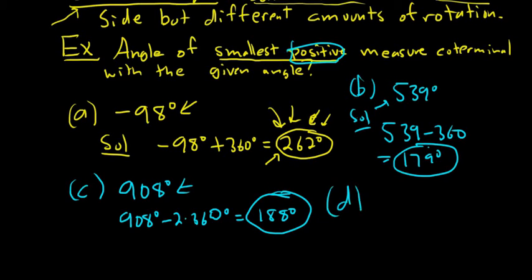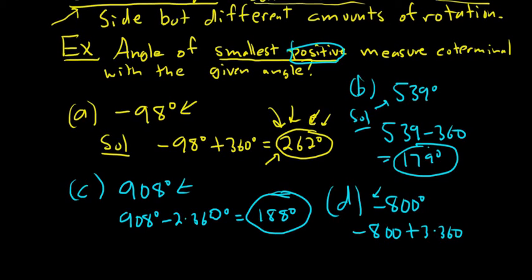Example D: negative 800 degrees. Since it's negative, we need to add 360. Adding it twice still leaves a negative result, so we add it three times: negative 800 plus 3 times 360 equals 280 degrees. If we add it again we get a bigger angle, so 280 is the smallest positive angle coterminal with negative 800.